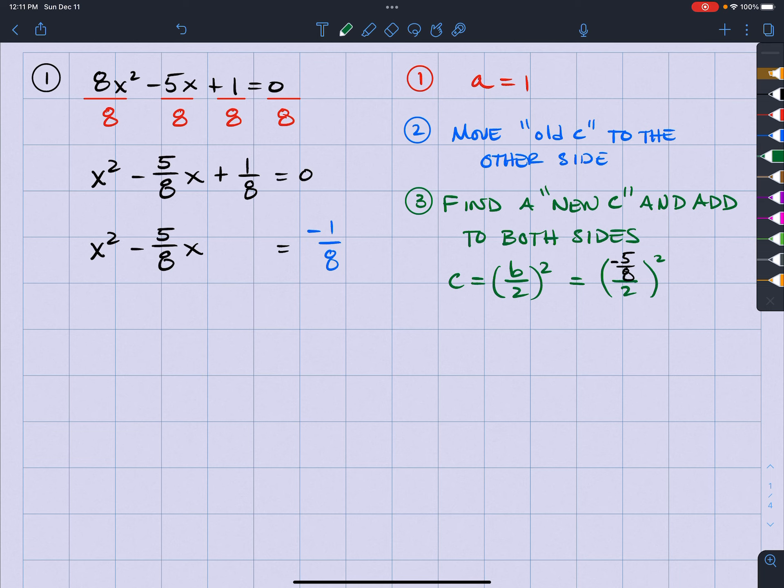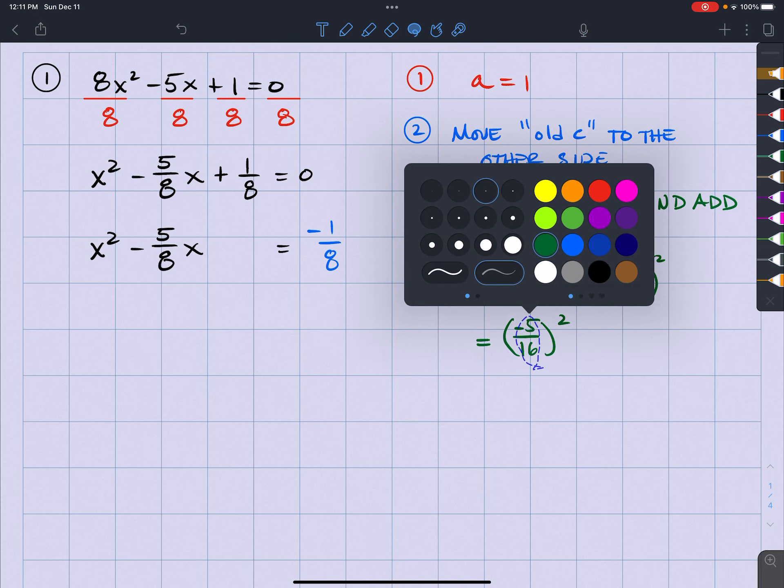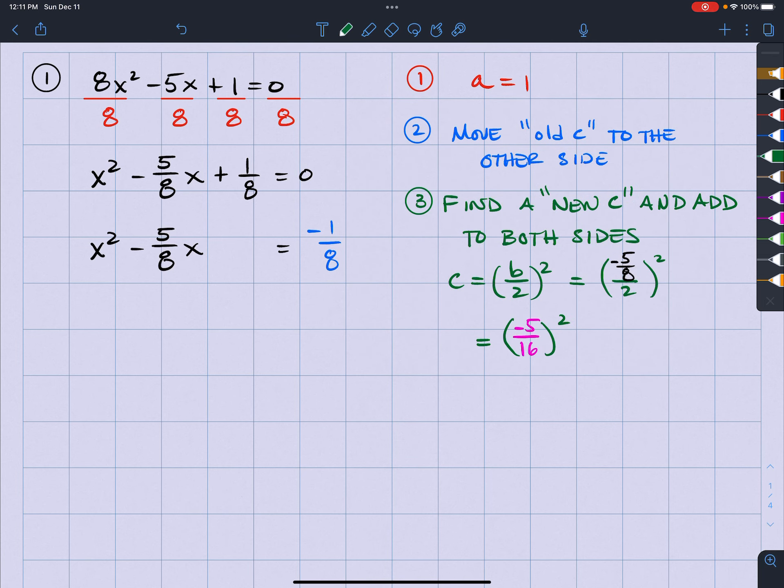And if I square that, I mean sorry, if I divide that by 2, what I'm going to get is negative 5 sixteenths. Actually, let me change this color right now in front of you. And negative 5 sixteenths squared is going to be 25 over 256.